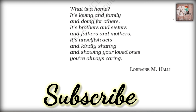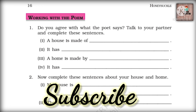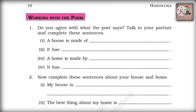I hope you have understood this poem. Let's solve the working with the poem. Only two questions are there and it's very easy. Question one: Do you agree with what the poet says? Complete these sentences. A — a house is made up of brick, stone, hardwood, window glass, etc. B — it has chimney, tile floor, stucco, and lots of doors.